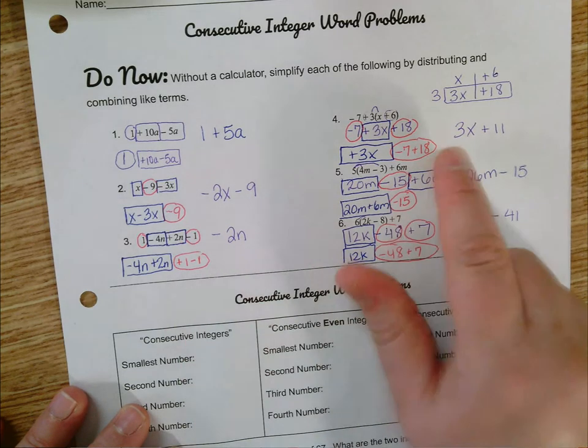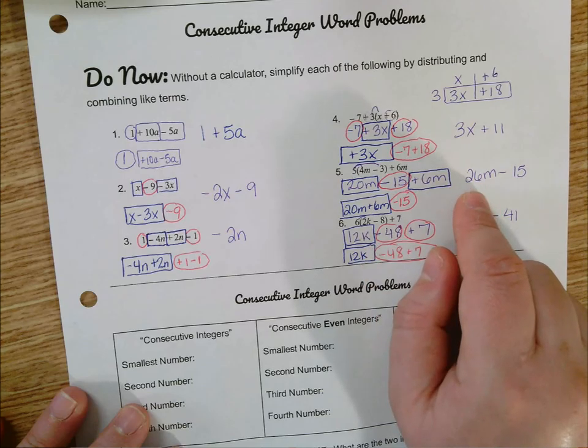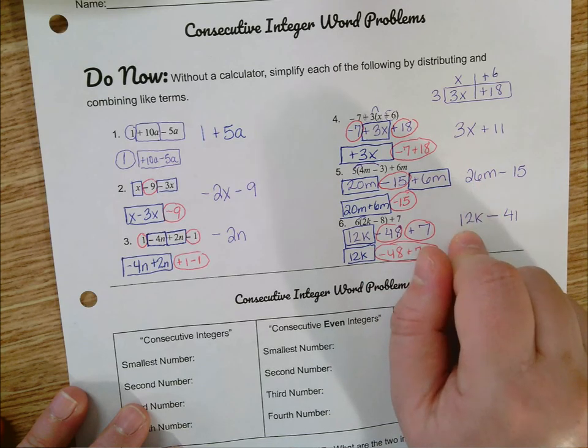Number 4, 3x plus 11. Number 5, 26m minus 15. Number 6, 12k minus 41.